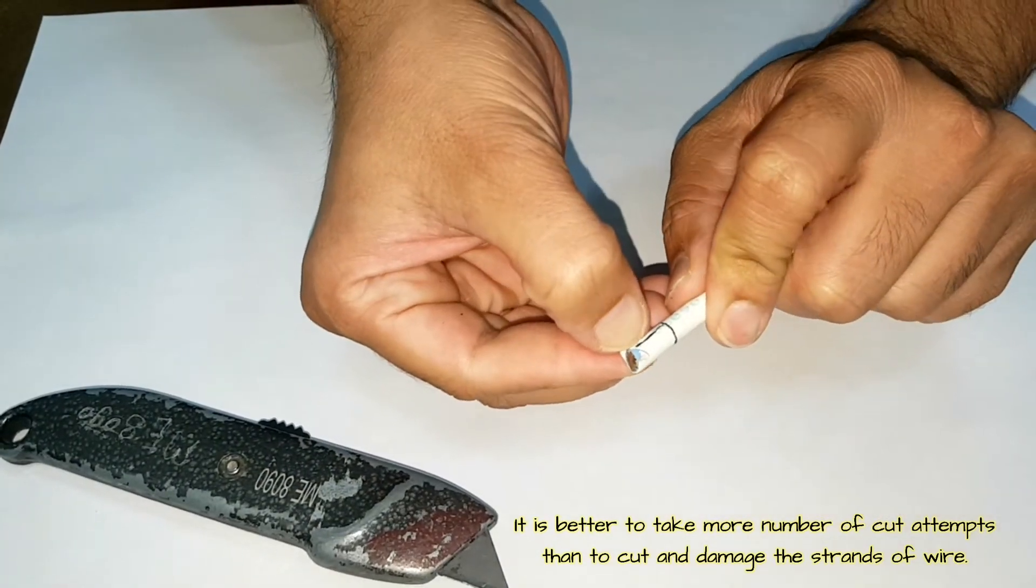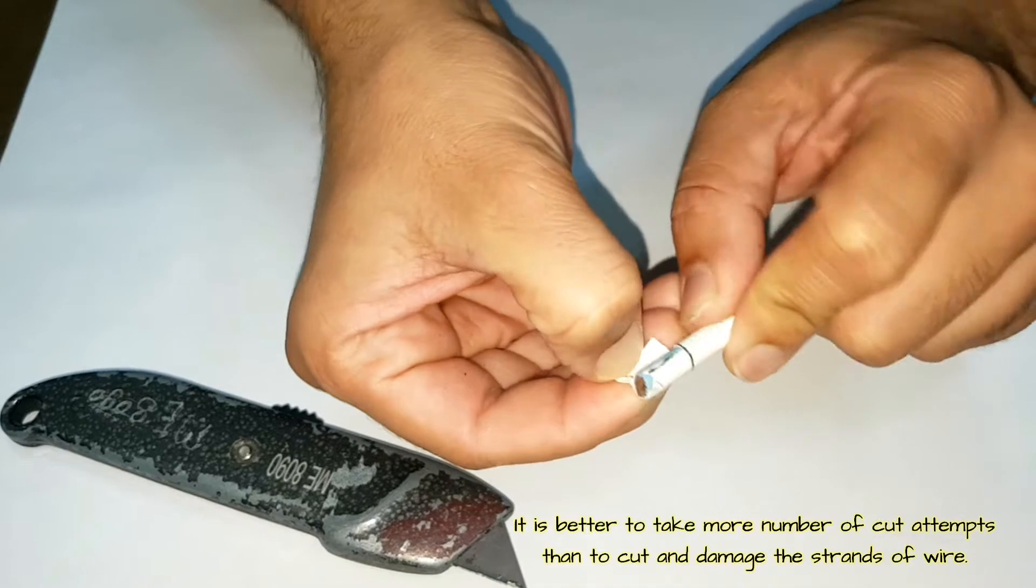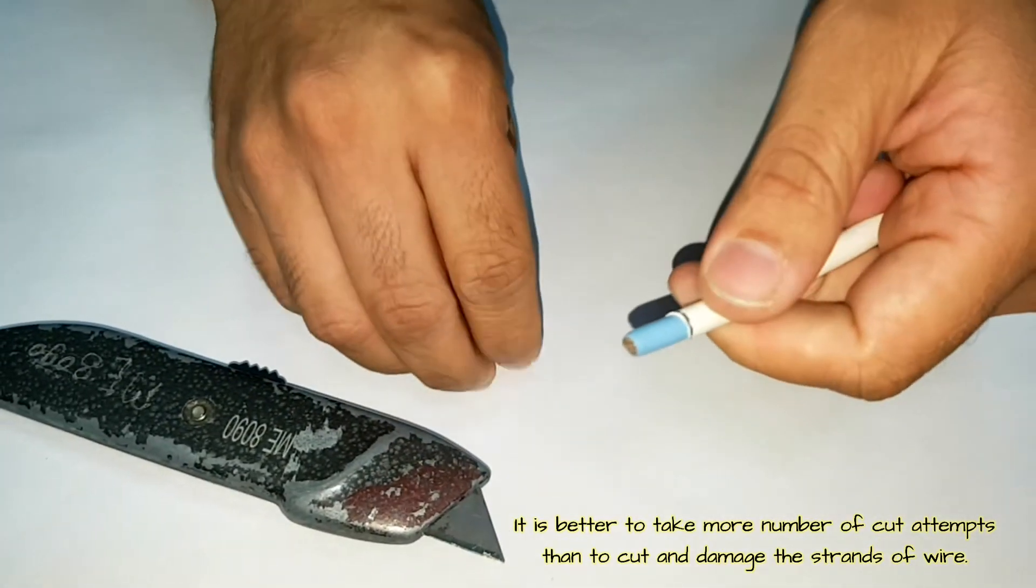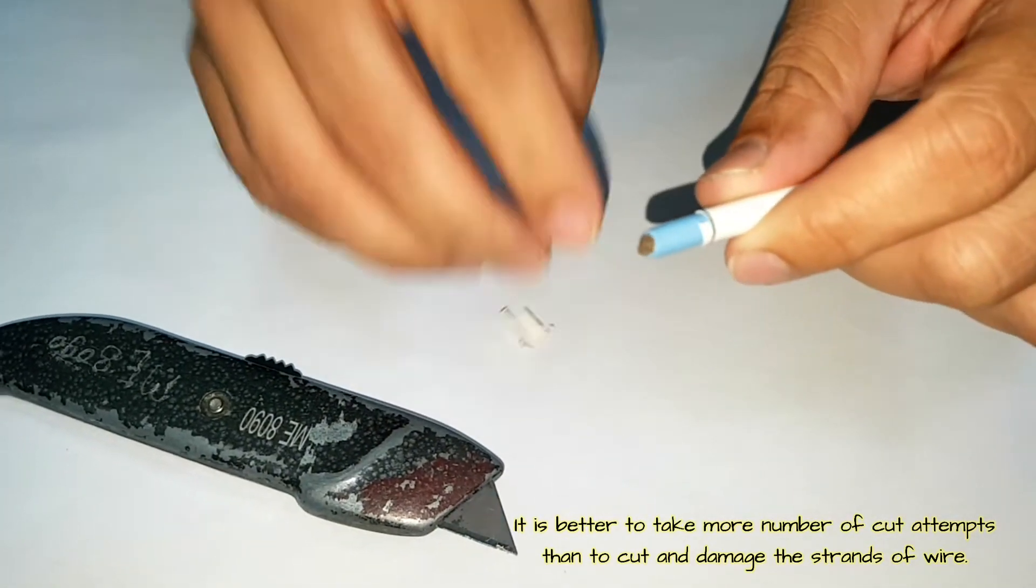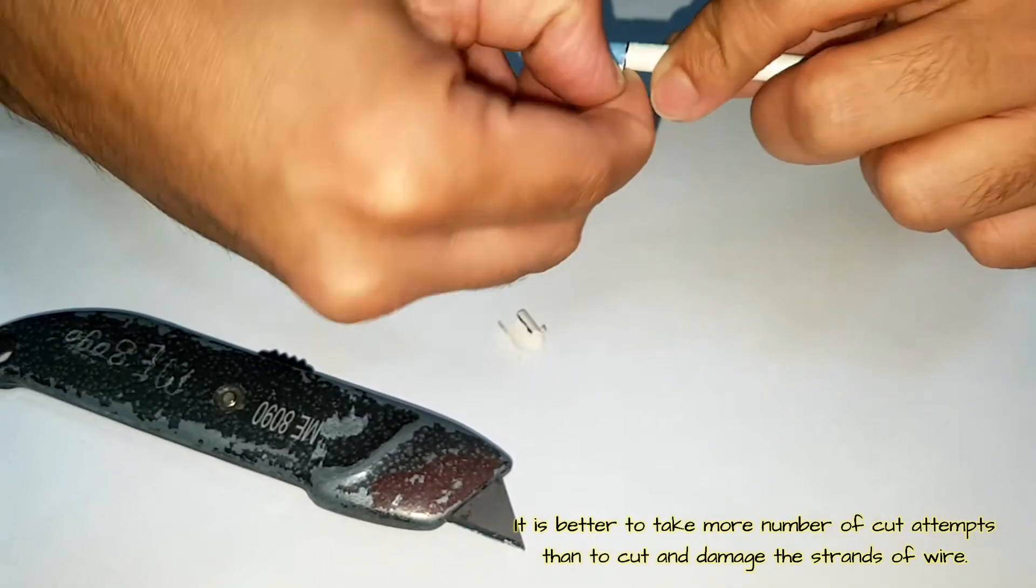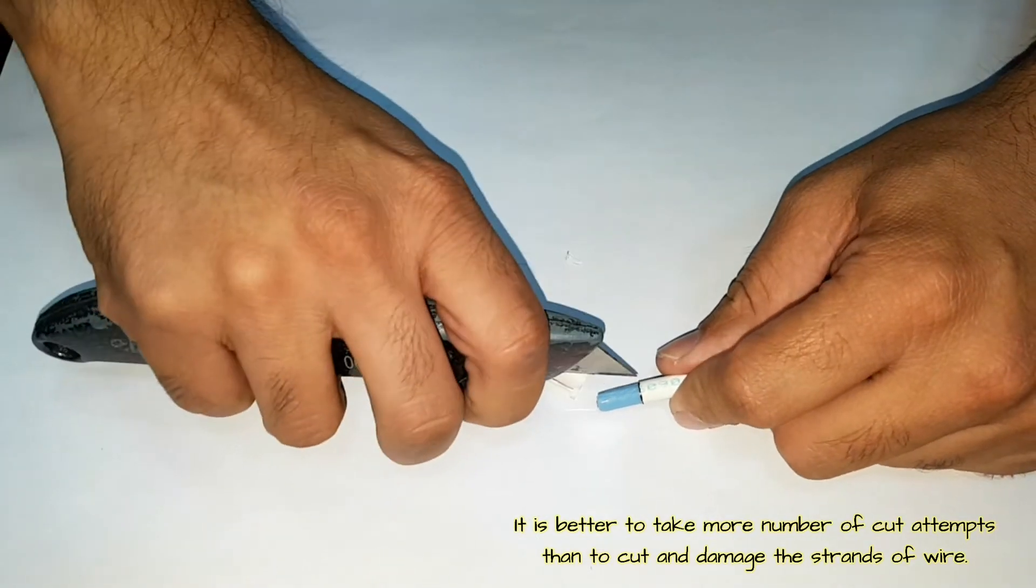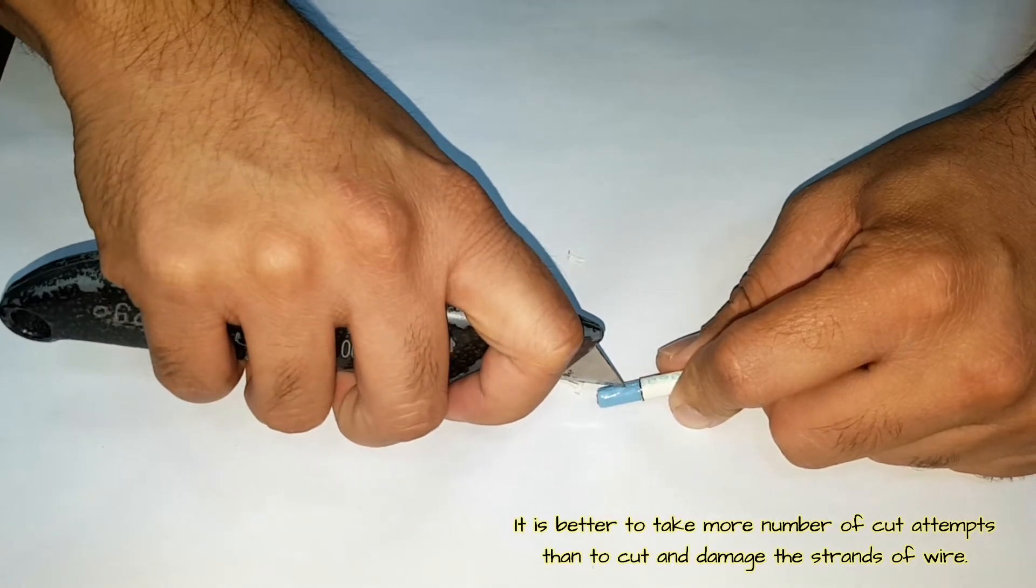So in this cable there are two insulations, one is white upper one, the other is blue lower one. Same thing we have to do for the blue also. Just take care you don't cut the strand.